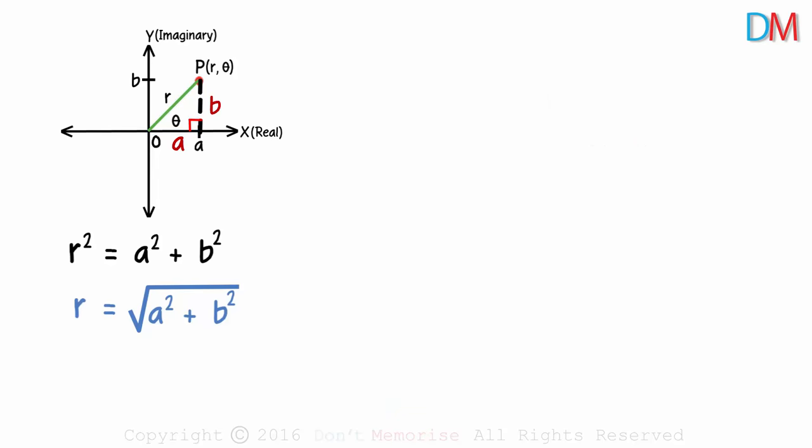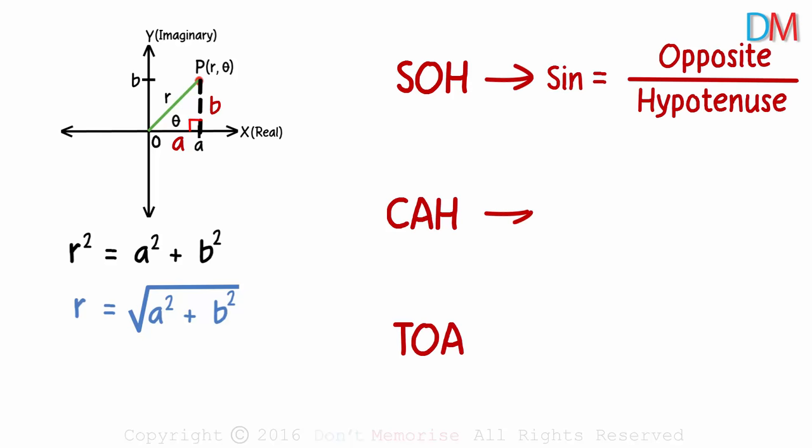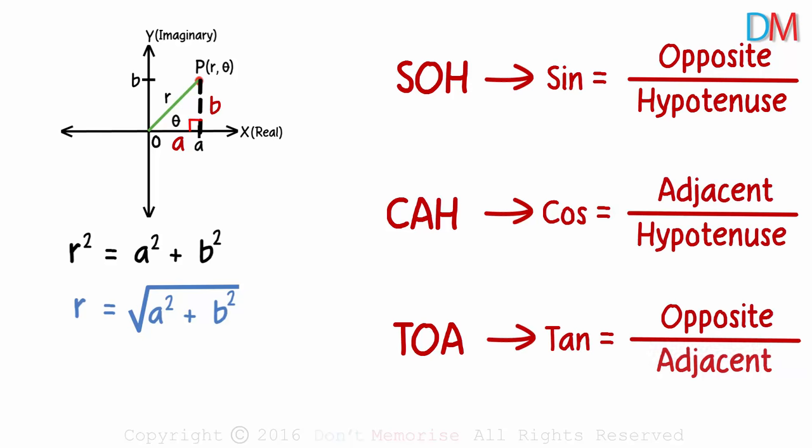Do you remember the code we used for the three basic functions in trigonometry? Yes, it's SOH CAH TOA. Sine is opposite over hypotenuse, cos is adjacent over hypotenuse, and tan is opposite over adjacent.